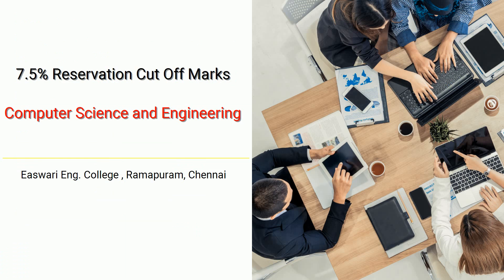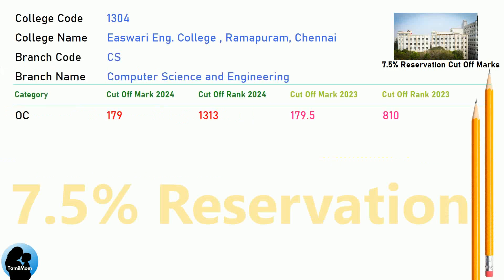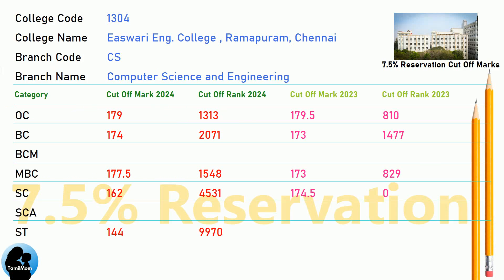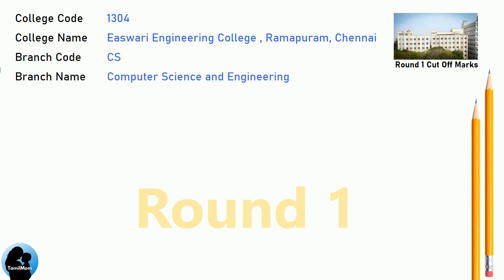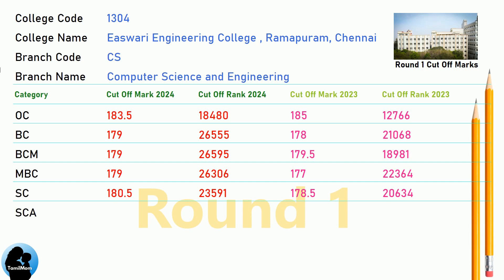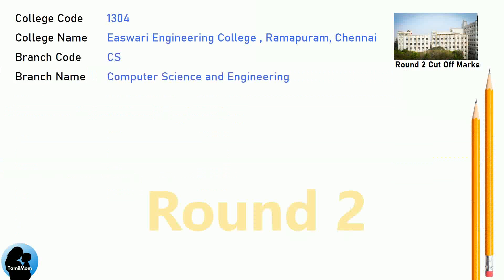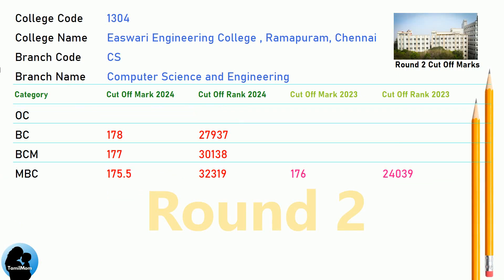DNA 7.5 Reservation Cut-Off for Eshwari Engineering College in Computer Science and Engineering. DNA 8.5 Reservation Cut-Off for Eshwari Engineering College in Computer Science and Engineering. DNA 9.5 Reservation Cut-Off for Eshwari Engineering College in Computer Science and Engineering.